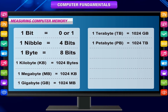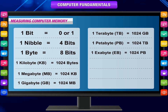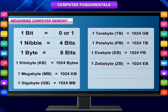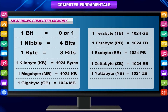1 petabyte or PB is equal to 1024 TB. 1 exabyte or EB is equal to 1024 PB. 1 zettabyte or ZB is equal to 1024 EB. 1 yottabyte or YB is equal to 1024 ZB.